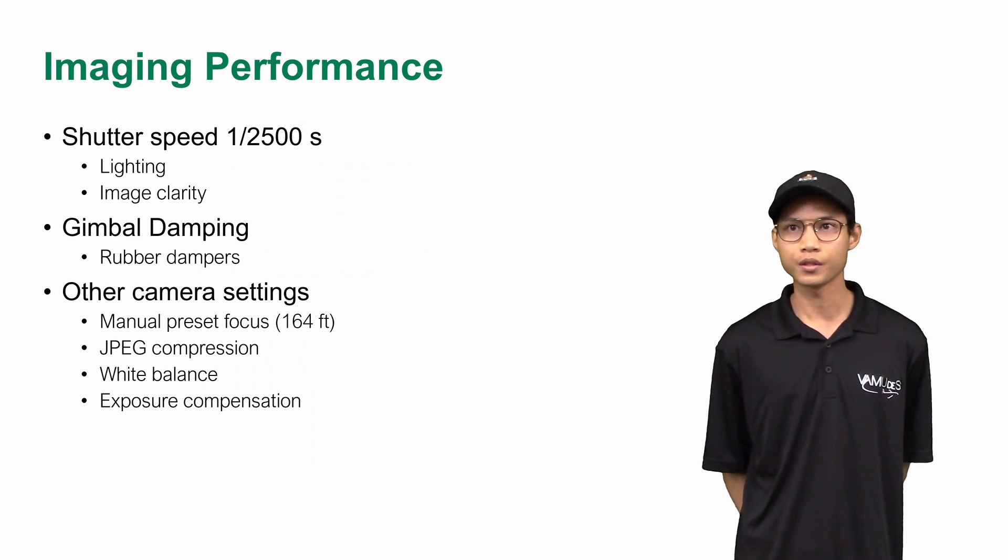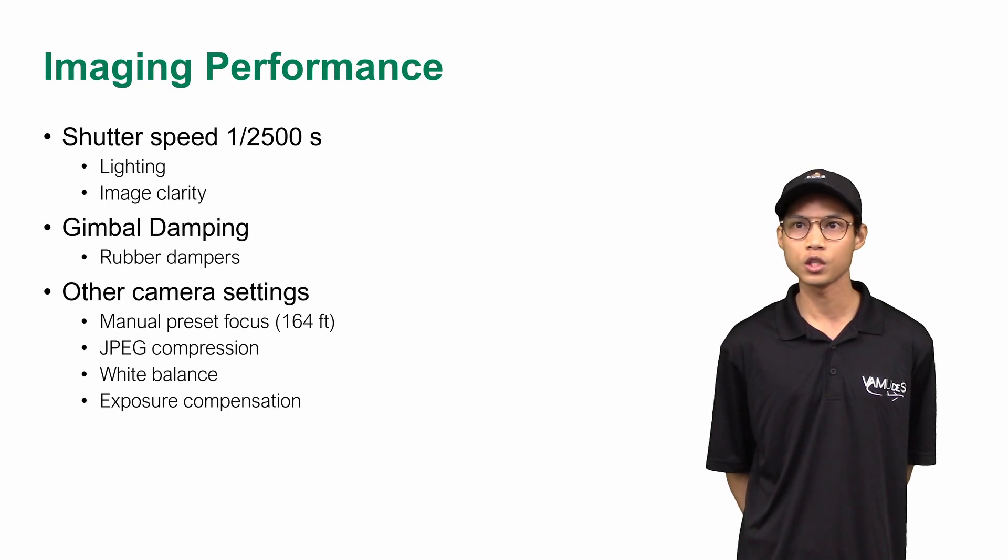The camera settings are optimized for image clarity. The shutter speed is set to minimize the vibrations and the speed of the drone. Rubber dampers are also used to minimize the vibrations. The focus is set to 164 feet as this is the altitude at which the imaging task will be done.